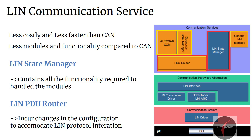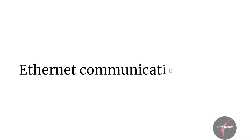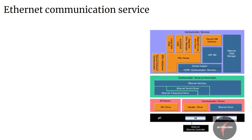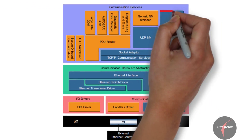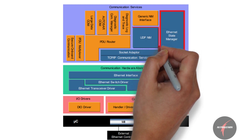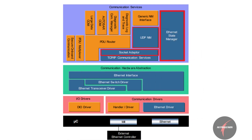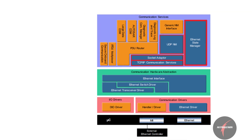Having covered a brief on LIN and understood the changes to FlexRay and LIN communication services in comparison to CAN, let's now understand the changes observed in the Ethernet communication service. The Ethernet service contains basic modules such as Ethernet state manager, UDP NM, socket adapter, and TCP/IP communication service, which are different from CAN communication.